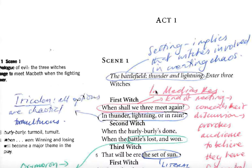I'm just going to quickly talk you through some of the techniques that are used in this opening act and scene of Macbeth. We have the battlefield in thunder and lightning. This opening setting implies that the witches are involved in creating chaos, that we're entering on a scene that visually implies chaos, and that the witches — the only participants — are associated with that particular type of chaos.